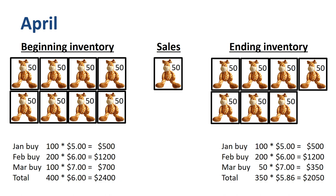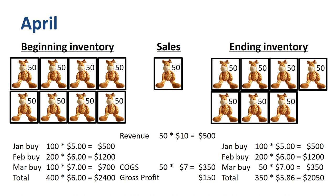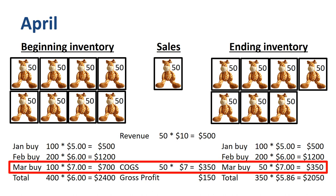Under LIFO, the average cost per unit in inventory goes down in this example. If we prepare the income statement for April: revenue is 50 units times $10 is $500; cost of goods sold, or COGS, is 50 units times $7 is $350; and gross profit is $150. Out of the March buy that was part of the beginning inventory, 50 units go to COGS and 50 units go to the ending inventory.